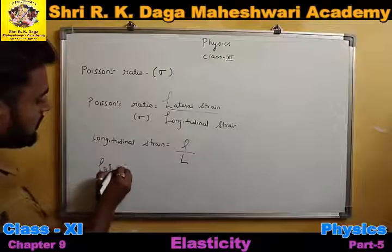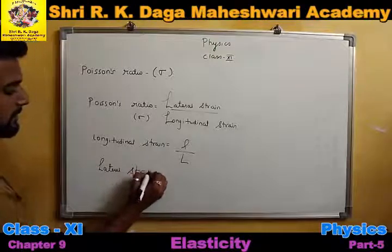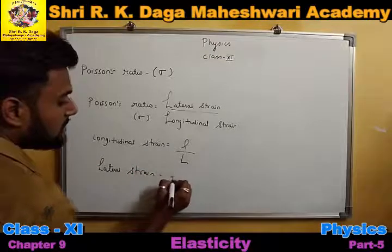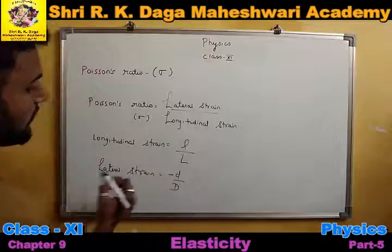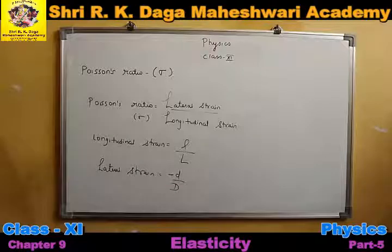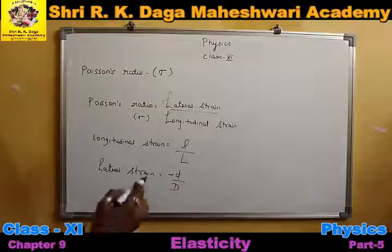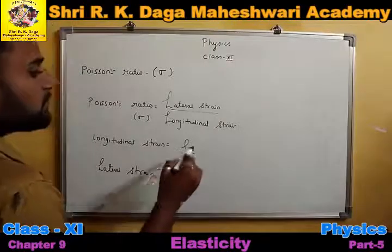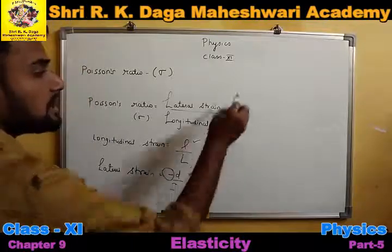If I talk about lateral strain, that is the change in diameter - lateral strain formula will be change in diameter upon the original diameter, but here we have a minus sign also. The minus sign indicates that as the length increases, the diameter decreases, or as the length decreases, the diameter increases. So this minus sign indicates that due to the increase in length, there will be a decrease in diameter.